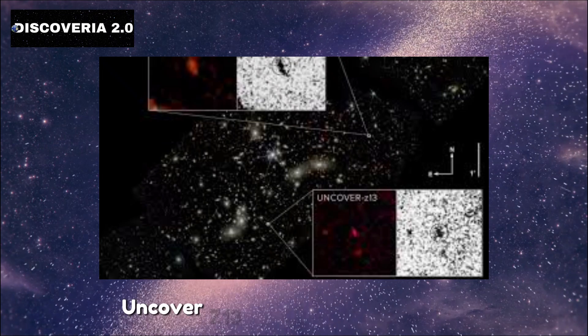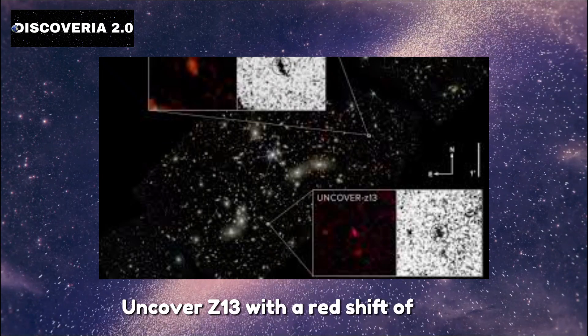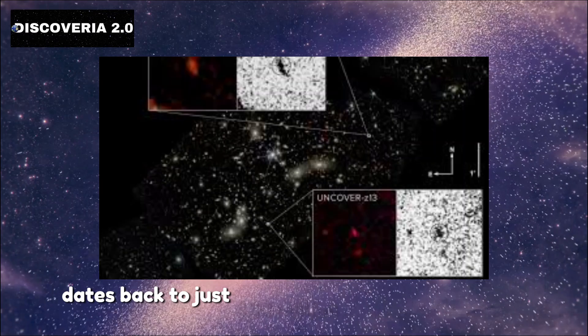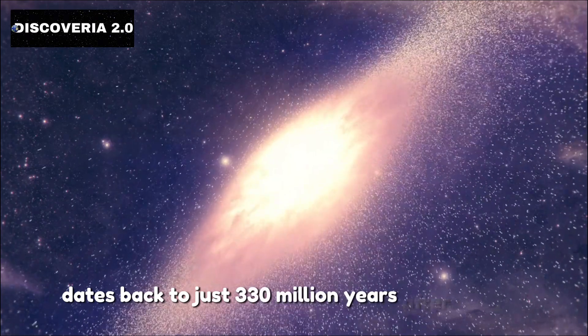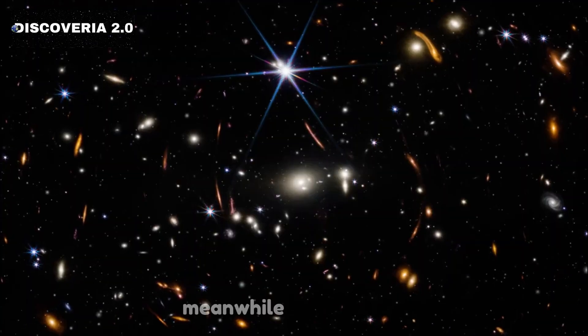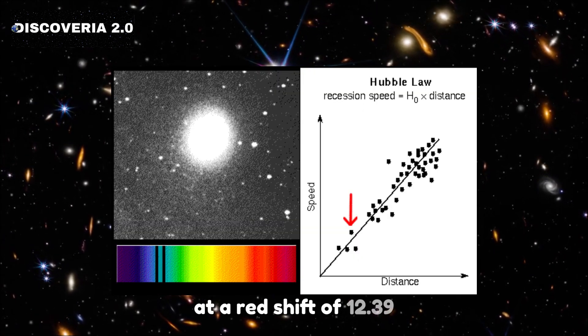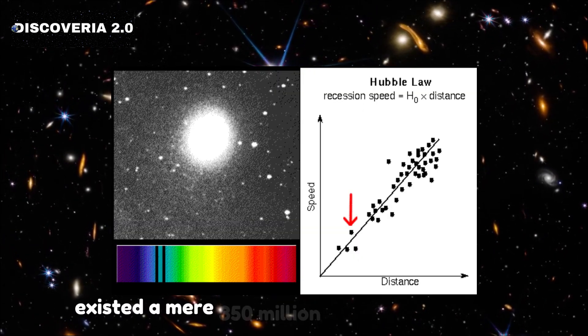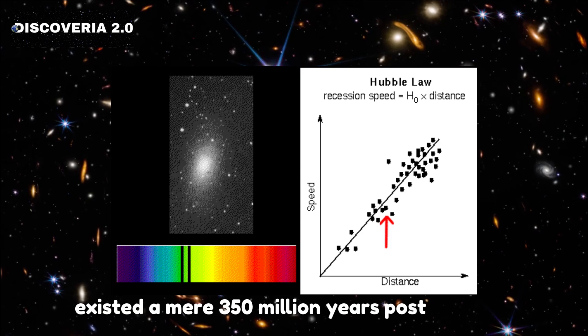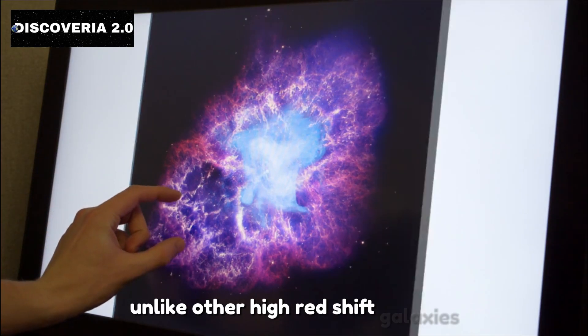Uncover Z13, with a redshift of 13.07, dates back to just 330 million years after the Big Bang. Meanwhile, Uncover Z12, at a redshift of 12.39, existed a mere 350 million years post-Big Bang.